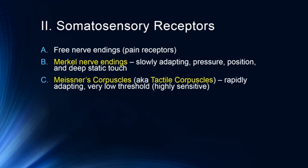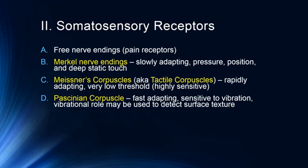Meissner's corpuscles, also known as tactile corpuscles, are rapidly adapting — they adapt to the presence of a stimulus very quickly. This is why you don't notice your watch or ring after a while, because you've adapted to its presence. These have very low thresholds, meaning they're highly sensitive, useful for telling the texture of a material or reading Braille. Pacinian corpuscles are also fast adapting and sensitive to vibration. Their vibrational role may also detect surface texture — as you move your fingers across a rough surface, you'd feel it vibrate. This is also how you notice your phone ringing when it's set to vibrate.